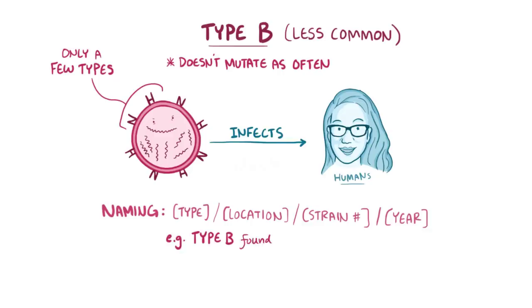For example, a type B virus found in Yamagata, Japan, which is the 16th strain discovered in 1988, would be called B Yamagata 1688.